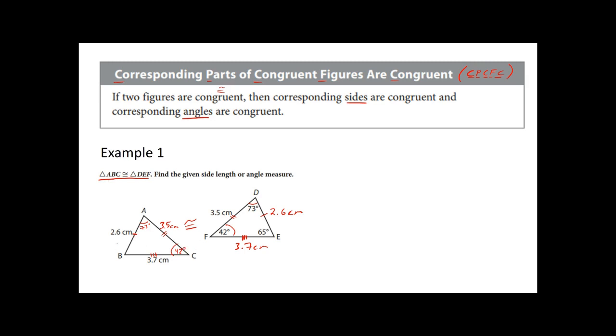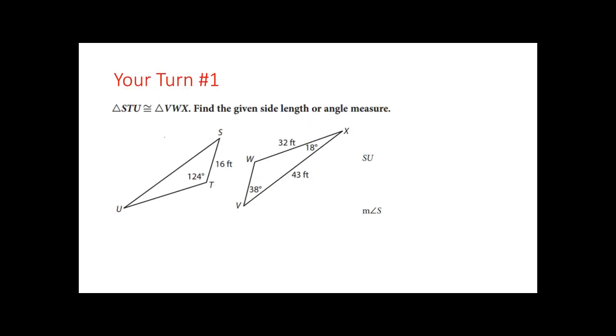So notice how I'm just using CPCFC to basically state that, well, this guy is the same as this guy over here. Because we're told that the whole triangles, both of them are congruent to each other. And lastly, our last little angle here is going to be 65 degrees because its corresponding angle is angle DEF.